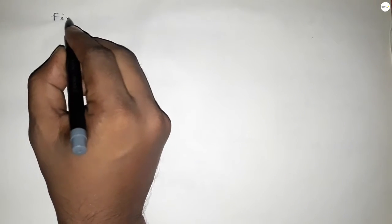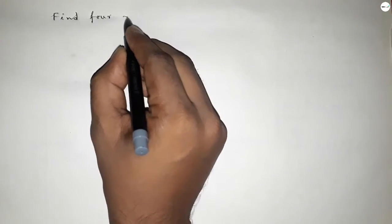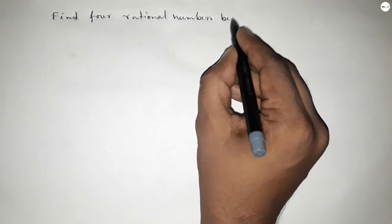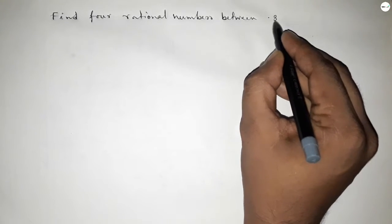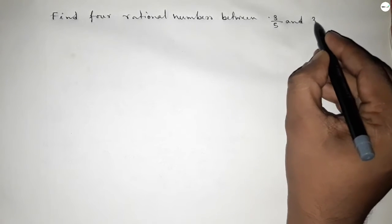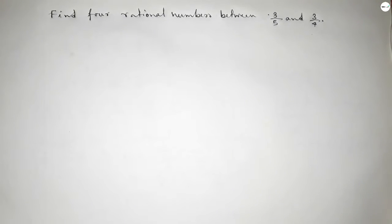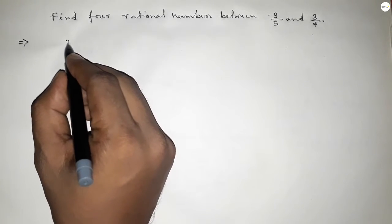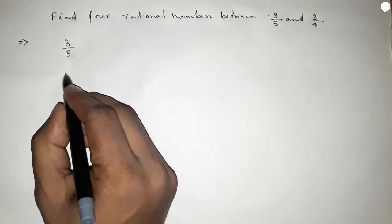Hi everyone, welcome to SSJ classes. Today in this video we have to find four rational numbers between 3/5 and 3/4. So let's start the video. First of all, write down here 3/5 and 3/4.